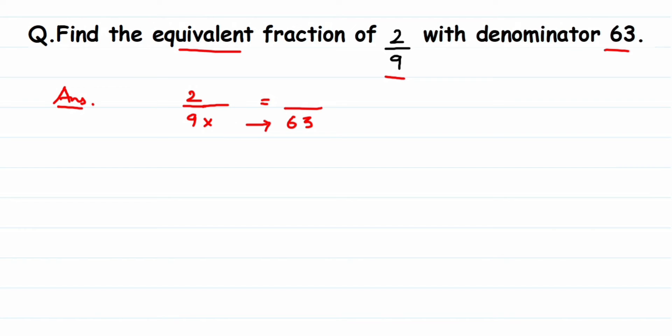This is how we find the equivalent fraction. So here I'm going to multiply with a 7 in the denominator and numerator. In numerator when you multiply 2 times 7 is 14, and in denominator we have a 63. So the equivalent fraction will become 14 upon 63 and we got 63 in the denominator.